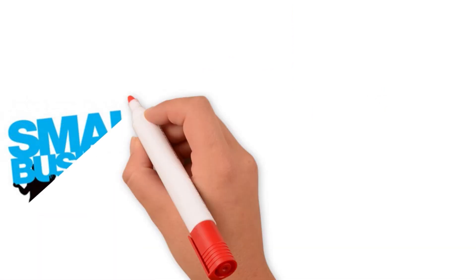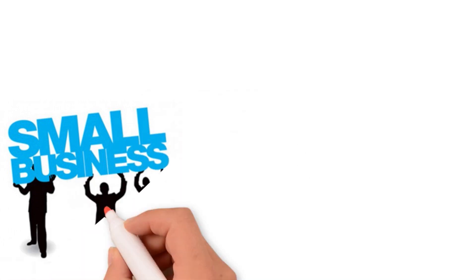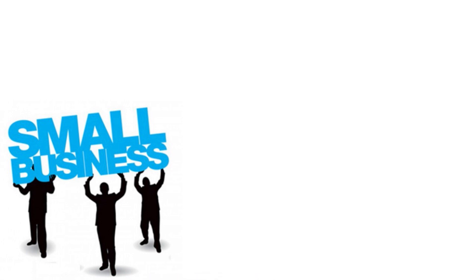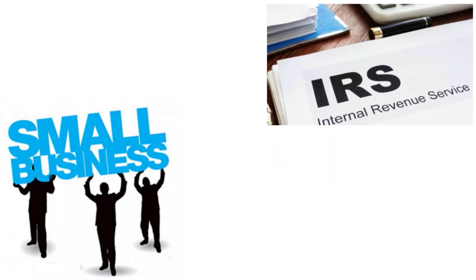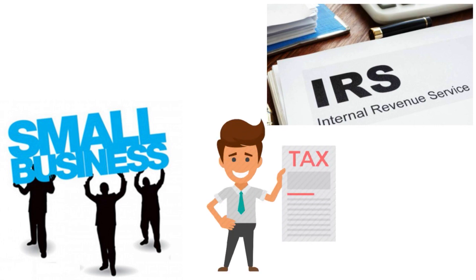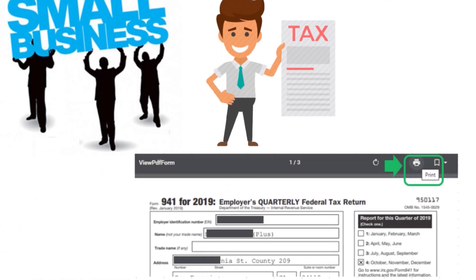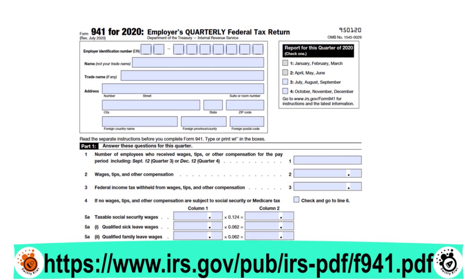As a small business owner, you need to pay attention to this. You have to comply. The IRS does not easily let businesses forget their tax filing responsibilities. Unlike individual taxpayers who only have to file one tax return per year, most businesses have to file quarterly tax returns. On Form 941, businesses report their income taxes and payroll taxes withheld from employees' wages. Failure to file this form on time or underreporting your tax liability can result in penalties from the IRS.